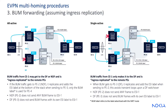For BUM forwarding, assuming ingress replication, BUM traffic from a CE may get to the DF or NDF and is ingress replicated to the remote PEs. The NDF does not send any BUM frames into the ESI. The designated forwarder doesn't send BUM frames with its own ESI label into the ESI, meaning traffic received on the ES from other sources doesn't get replicated again. BUM traffic from CE1 only makes it to the DF and is ingress replicated to the remote PEs. The NDF doesn't send any frames into the ESI, and the DF doesn't send BUM frames with its own ESI label into the ESI.